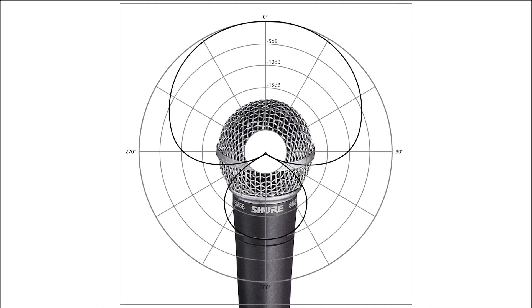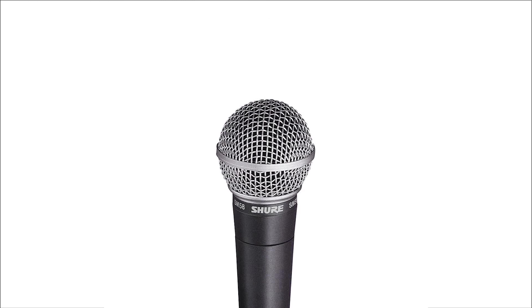Now that we understand how a microphone works, we need to discuss another very important aspect of microphone design. The pickup pattern is a way of describing the effective use of a microphone. It is often drawn as a polar graph and shows the relative sensitivity of different areas around the microphone. This is a very useful tool in selecting which microphone to use for a particular application, as well as how to place it relative to the sound source.